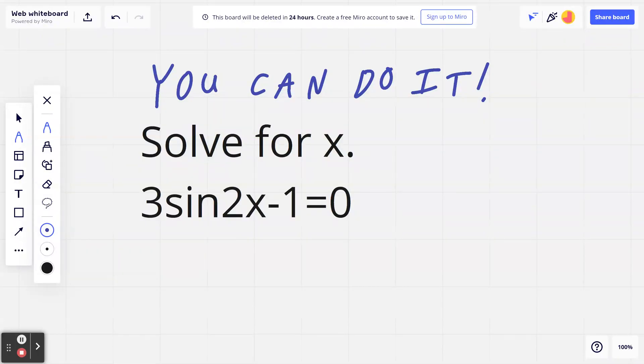Hi everyone, let's take a look at the following example. Solve for x: 3 times sine of 2x, which we'll put a bracket around, minus 1 equals 0.